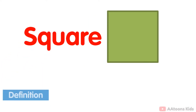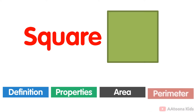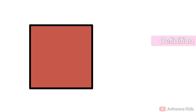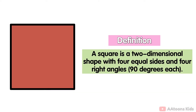Definition of a square: a square is a two-dimensional shape with four equal sides and four right angles of 90 degrees. It is a regular quadrilateral, which means that all four sides are of equal length.